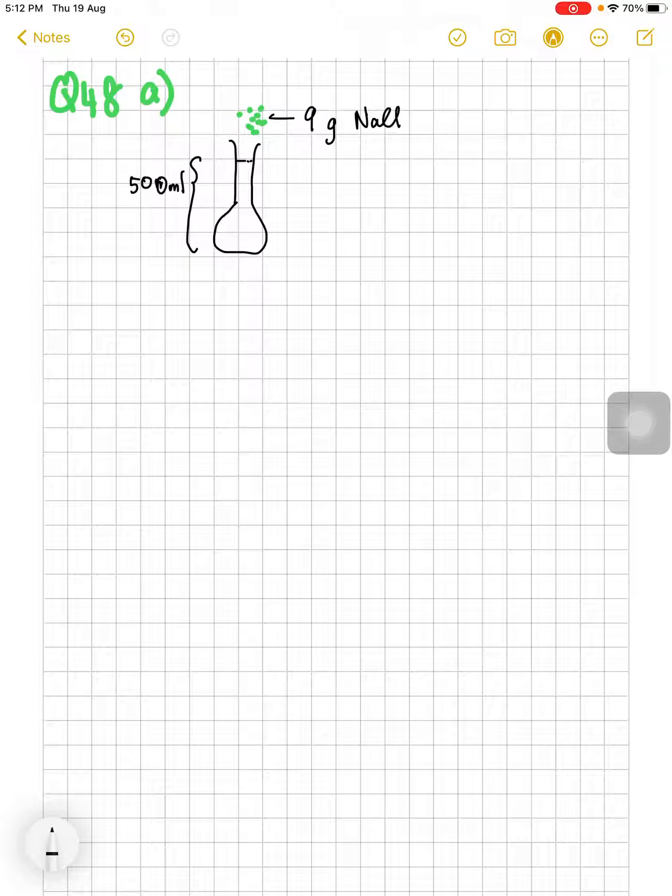Hi students, now we already reached question 48A. Look at question 48A. Given that 9 grams of sodium chloride is dissolved in 5 ml of deionized water in a 500 ml volumetric flask.